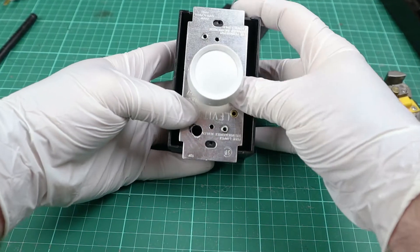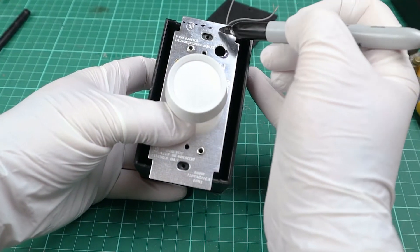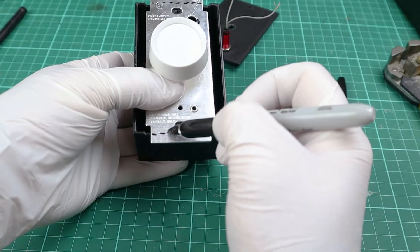I'm just marking out the tabs here on the dimmer switch. They'll have to be cut off with a set of tin snips so that it doesn't hang outside of the box.